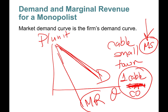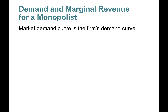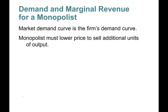Marginal revenue is half the slope of the demand curve and will divide the area in two equal pieces. The market demand curve is the firm's demand curve, and the monopolist must lower price to sell additional units of output.